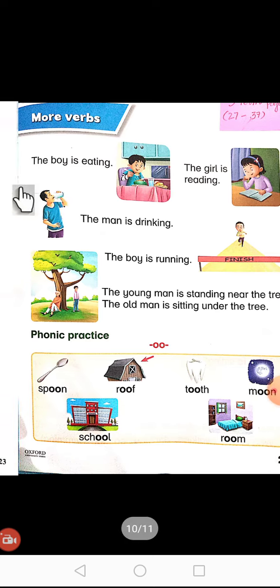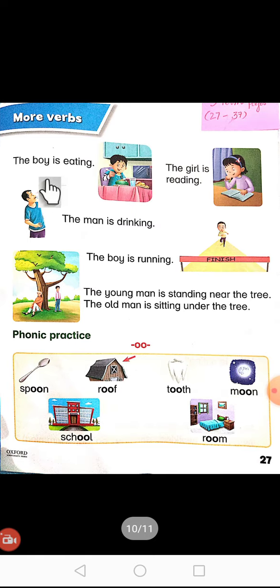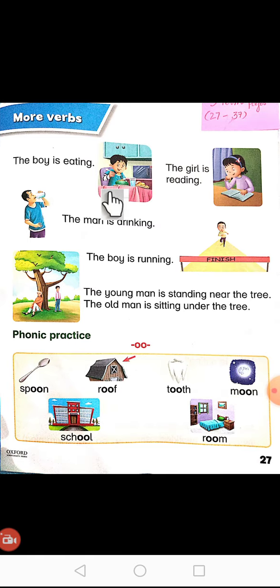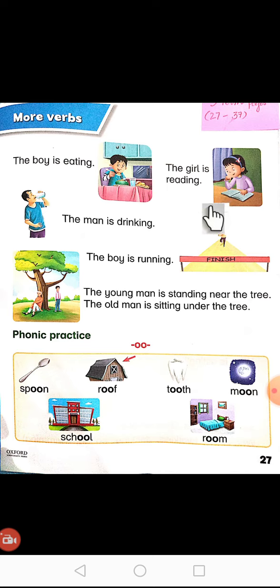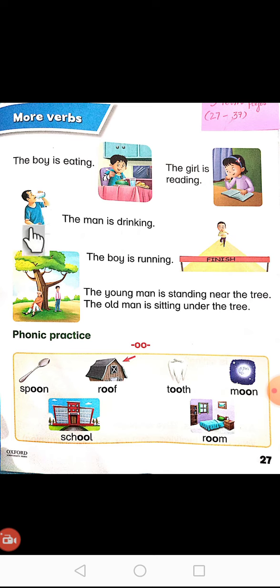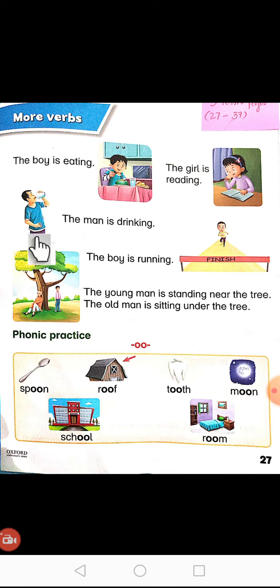The boy is eating. The girl is eating. The girl is reading. Aadmi pei raha hai. The boy is eating. The girl is reading. The man is drinking. The boy is running.